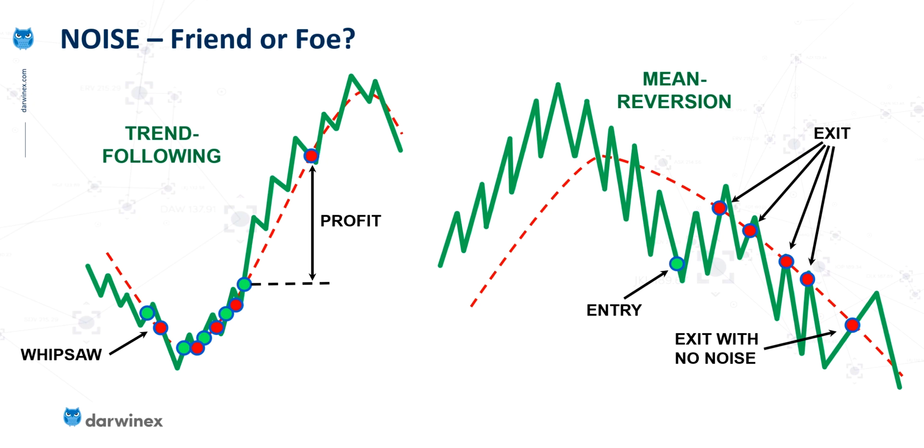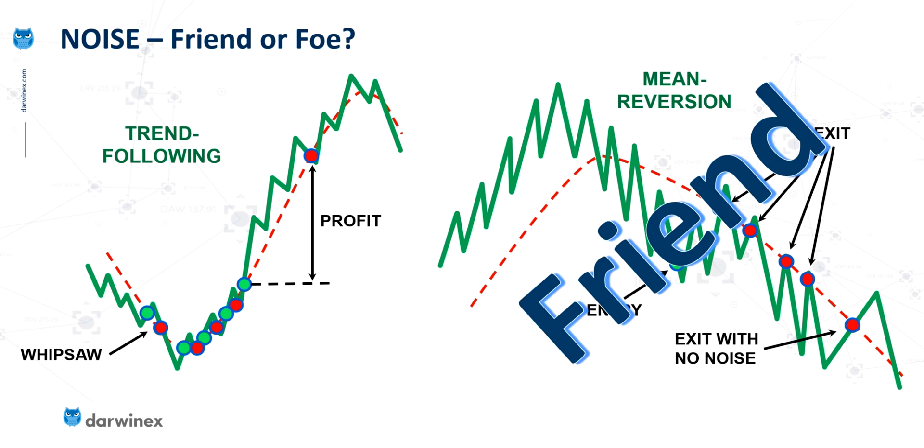And generally speaking, high levels of noise are okay for mean reversion systems, so we can say that it's the friend of these. Whereas for trend following strategies, noise can be a disaster, and so it's a foe.